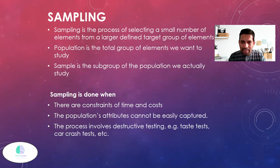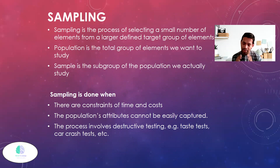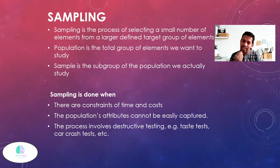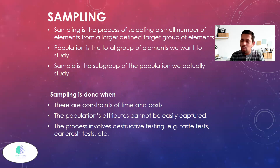So let's talk about sampling. Sampling is a process of selecting a small number from a large defined group, called a population. Population is the total group of elements we want to study. For our example, out of 40,000 pieces I cannot test all of them — I test a small amount and draw conclusions. Sampling is done when there are constraints of time and cost, or when the process involves destructive testing, such as car crash tests.